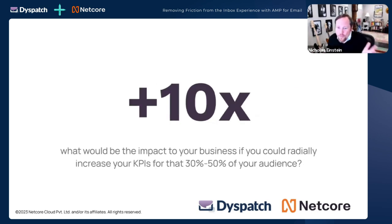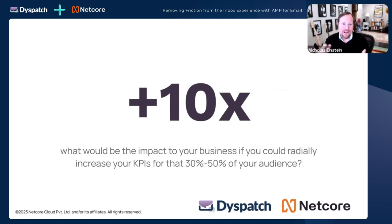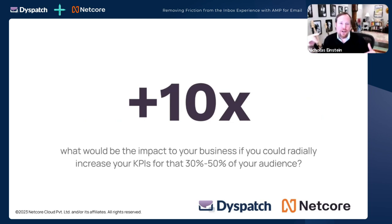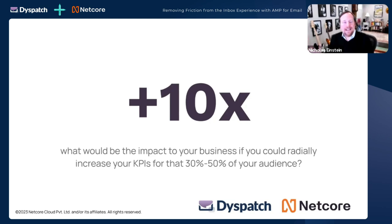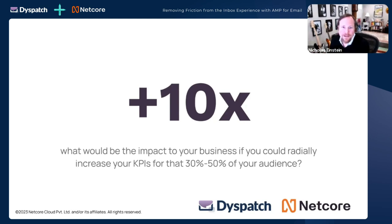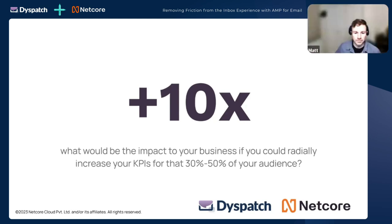Still a big chunk of your audience is addressable via AMP for email. Those data points show 10X lifts in many cases depending on the KPIs. If we can impact that 30 to 50% of your audience addressable via AMP and drive your metrics exponentially, what would that do for your business? For many of our clients and Matt's clients, it makes a really big difference — it's transformative to the channel.